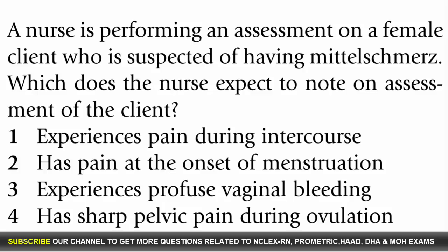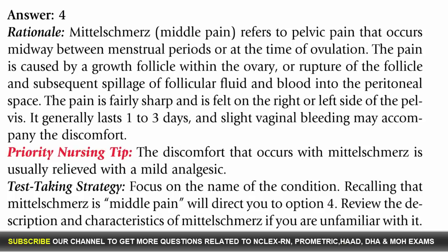Question 87: A nurse is performing an assessment on a female client suspected of having mittelschmerz. The nurse expects to note which finding? Options: 1. Pain during intercourse, 2. Pain at the onset of menstruation, 3. Profuse vaginal bleeding, 4. Sharp pelvic pain during ovulation. Answer: 4. Rationale: Mittelschmerz refers to pelvic pain that occurs midway between menstrual periods at the time of ovulation. The pain is caused by a growing follicle or rupture of the follicle with spillage of follicular fluid and blood into the peritoneal space. The pain is fairly sharp and felt on the right or left side of the pelvis, generally lasting one to three days with slight vaginal bleeding.